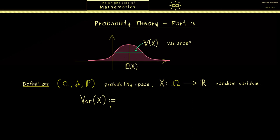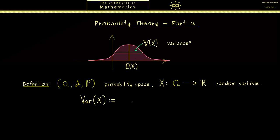The question is: how can we measure the deviation from the expectation? We look at a new random variable given by X minus E[X]. This new random variable has an expectation of 0. The question is how much does it deviate from 0. One idea is to square this new random variable to get rid of negative values, giving us again a new random variable with no contributions on the negative real number line.